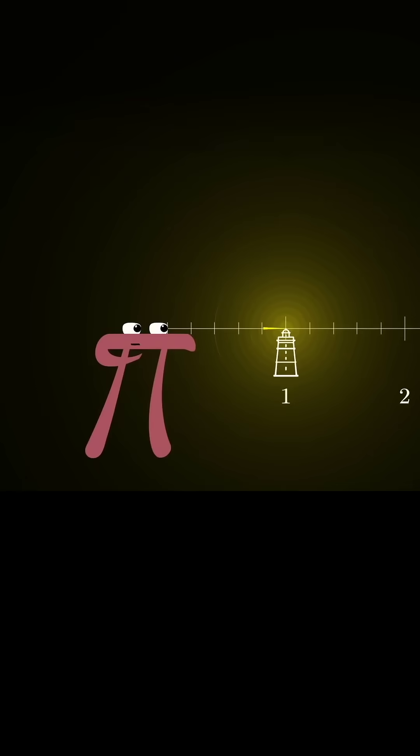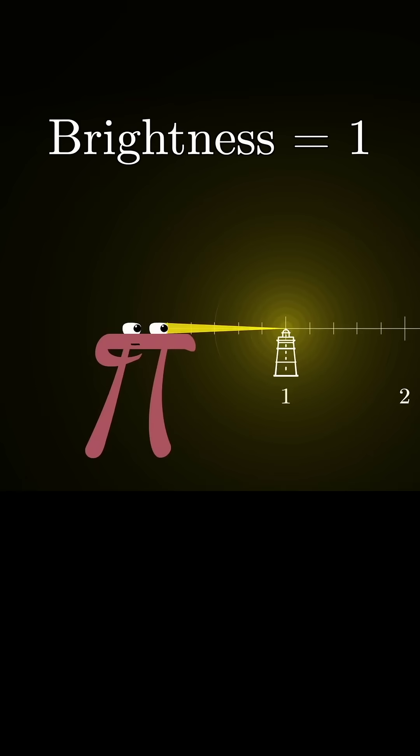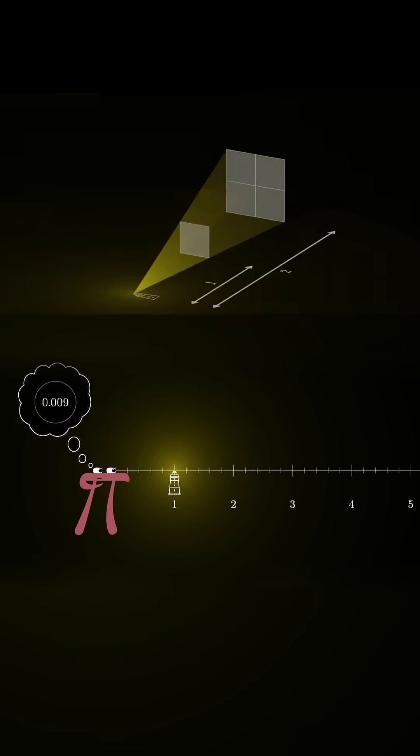Well, if you rescale units so that the brightness from that first light is 1, say measured as the energy your eye is receiving from it per unit time, then by the inverse square law,